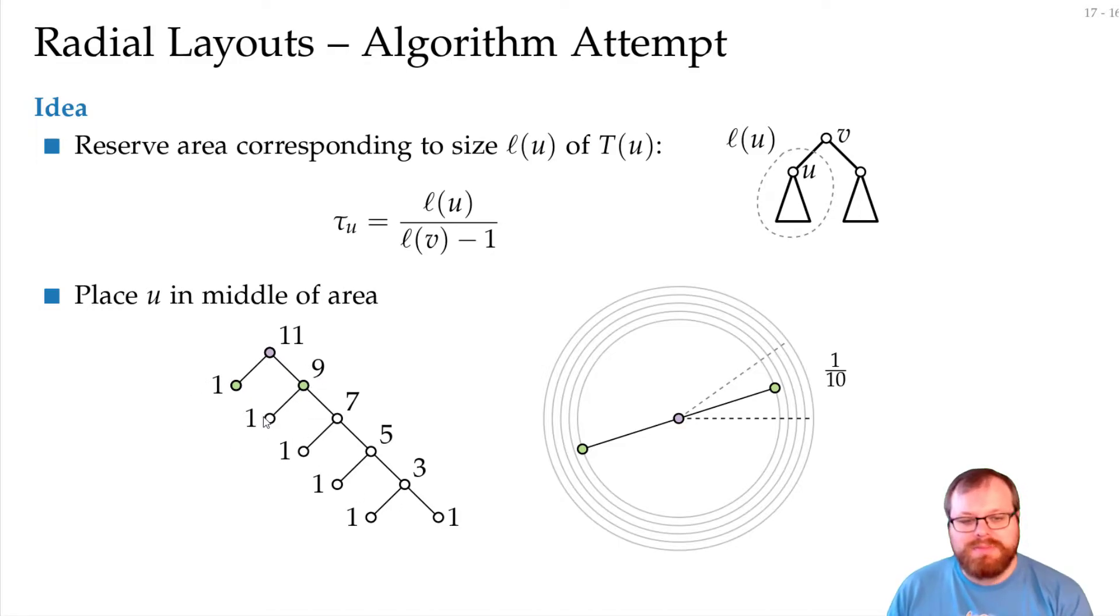Again, we have two subtrees. This one here has size 1, this is 7, so this one gets 1 eighth of what is left here. And the other one gets 7 eighth. So the area for this subtree is this part of the circle, we place it in the middle, for this one is here. And we connect them again with a straight line edge. We continue, this is size 1, so it gets 1 sixth of what is left here, which is over there, we place it in the middle, the other one in the middle here, and we connect them.